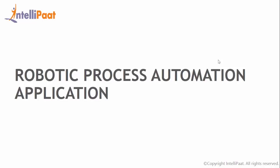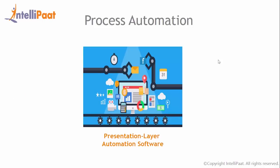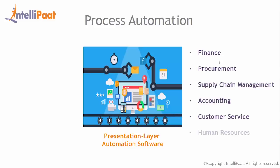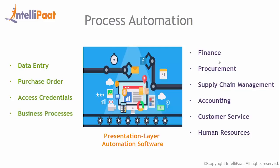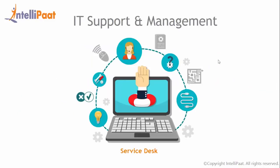The technology of RPA can be applied specifically to a wide range of industries. Technologies like presentation layer automation software — a technology that mimics the steps of a rule-based, non-subjective process without compromising the existing IT architecture — can consistently carry out prescribed functions and easily scale up or down to meet demand. Process automation can speed up back office tasks in finance, procurement, supply chain management, accounting, customer service, human resources including data entry, purchase order issuing, creation of online access credentials, or business processes that require cross-platform access to multiple existing systems. Automated processes in remote management of IT infrastructure can consistently investigate and solve problems for faster process results.